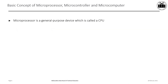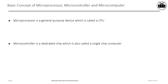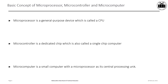Basic concepts: A microprocessor is a programmable electronic chip that has computation and decision-making capabilities similar to a central processing unit of a computer, hence referred to as a general-purpose device, also called the CPU. A microcontroller is a single-chip computer which processes and controls; it performs a specific task and is referred to as a dedicated chip. A microcomputer is a small computer itself with a microprocessor as its central processing unit.